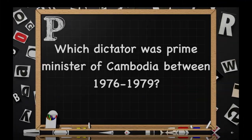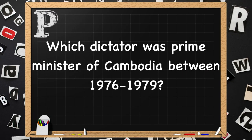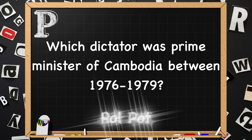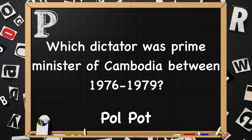Beginning with P. Which dictator was prime minister of Cambodia between 1976 to 1979? That was Pol Pot.